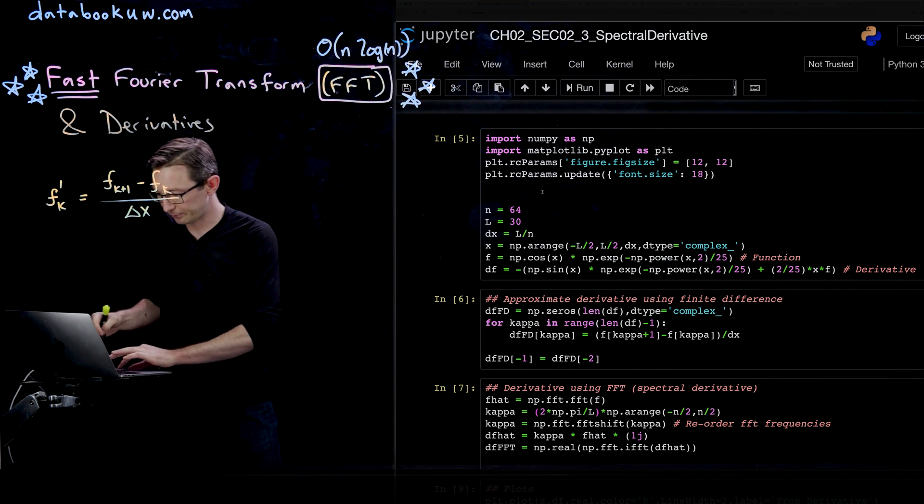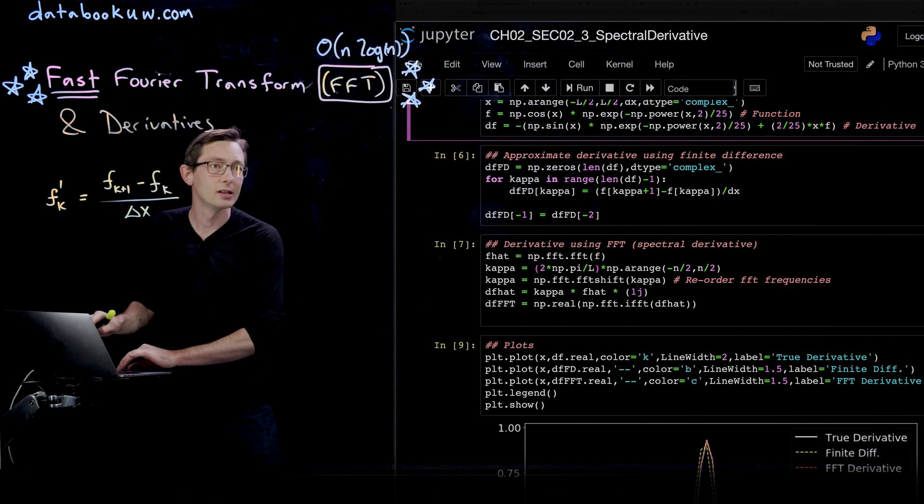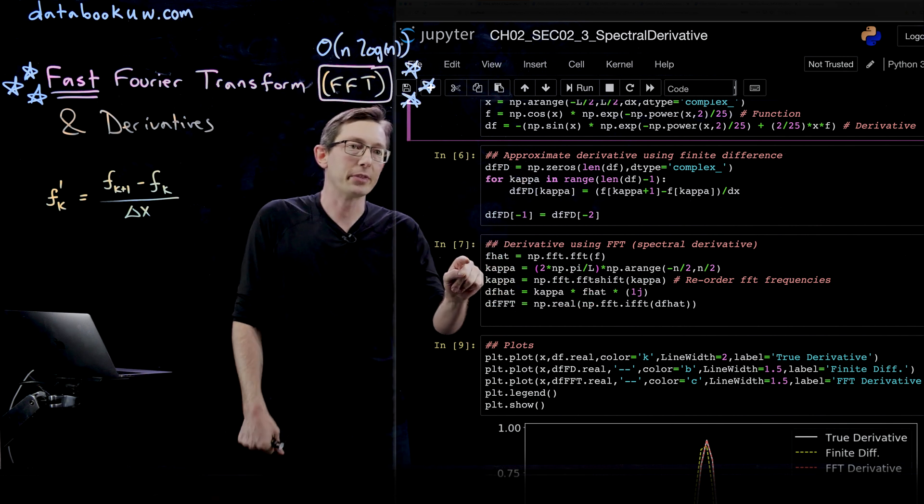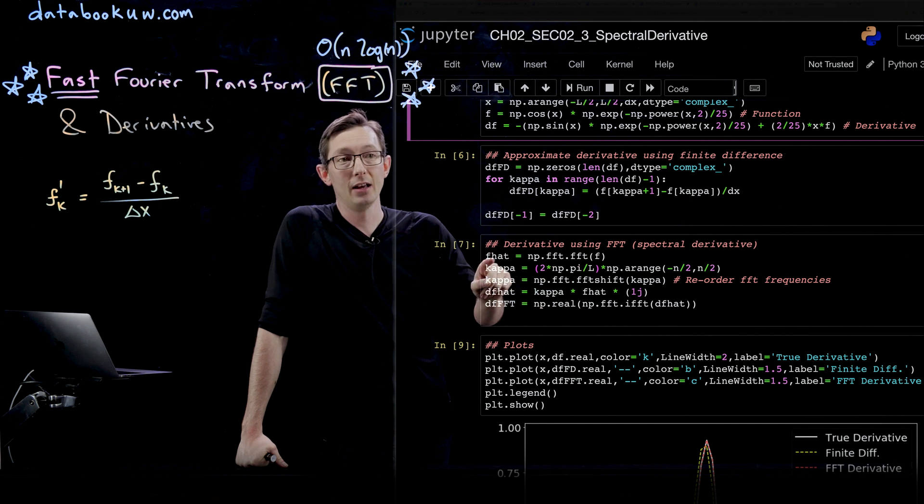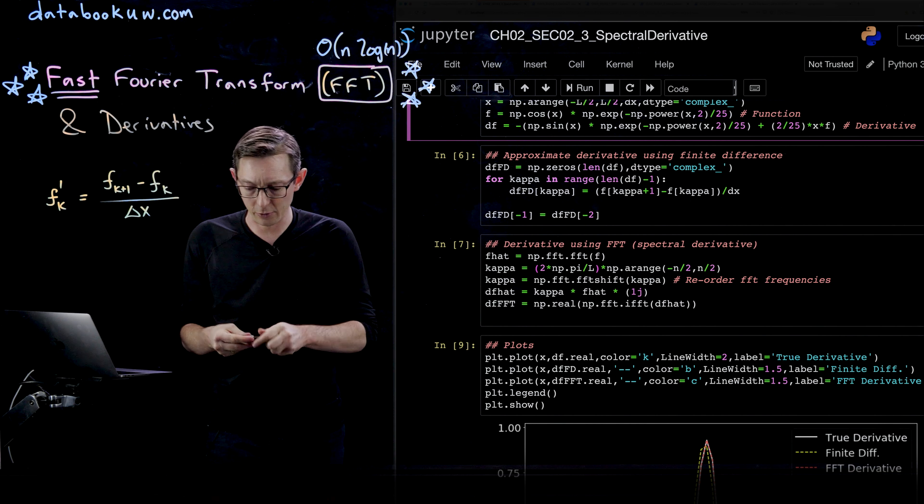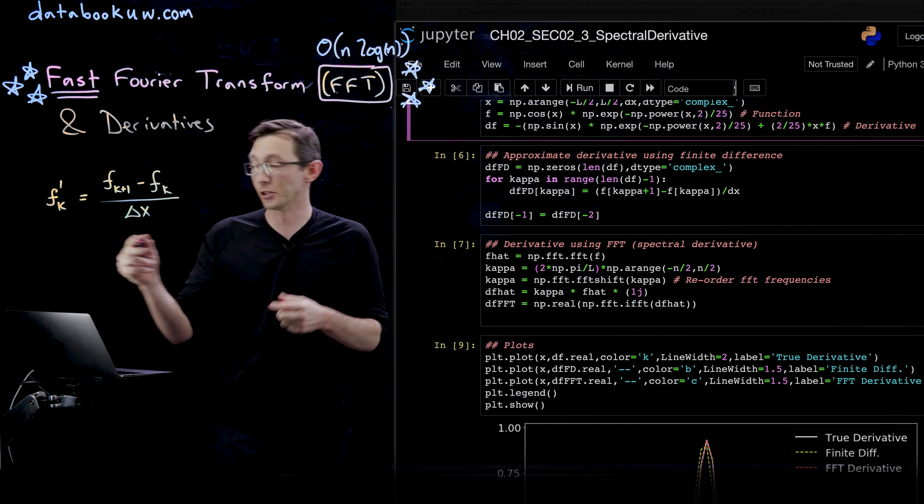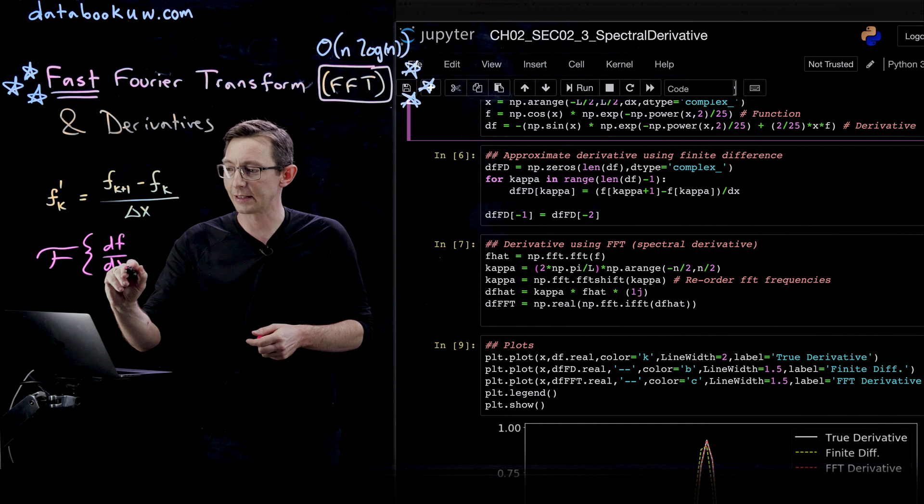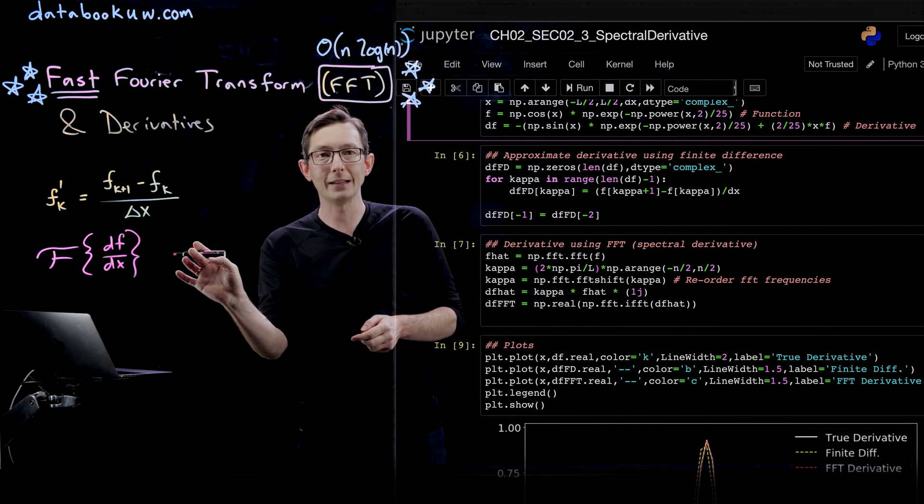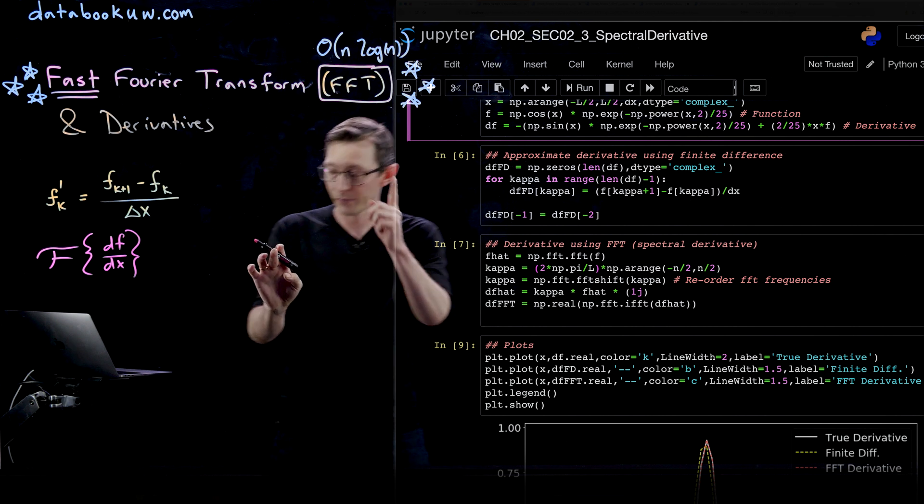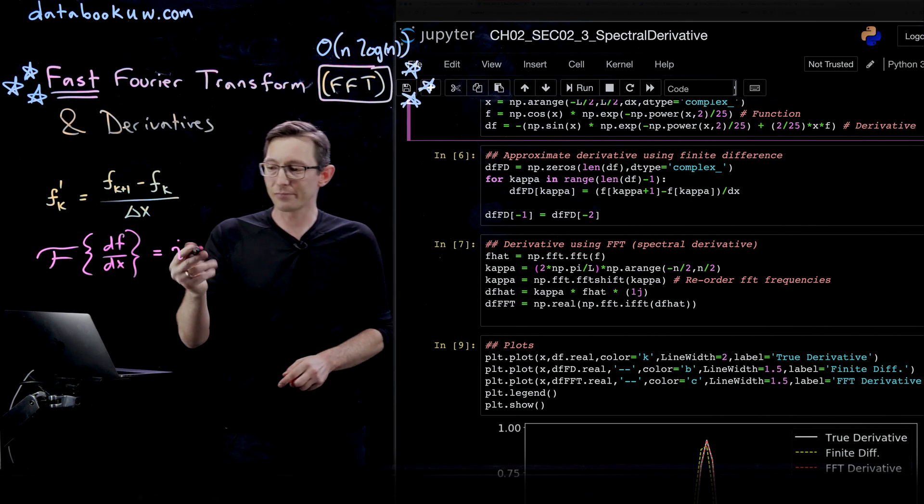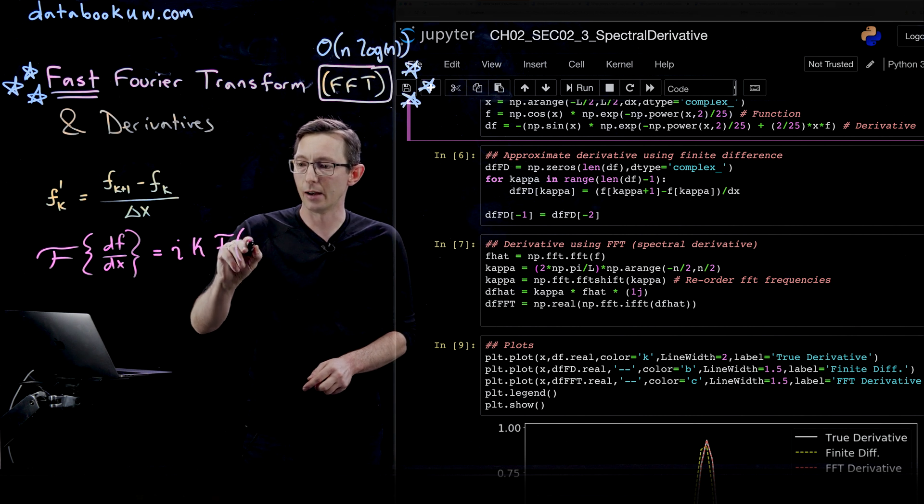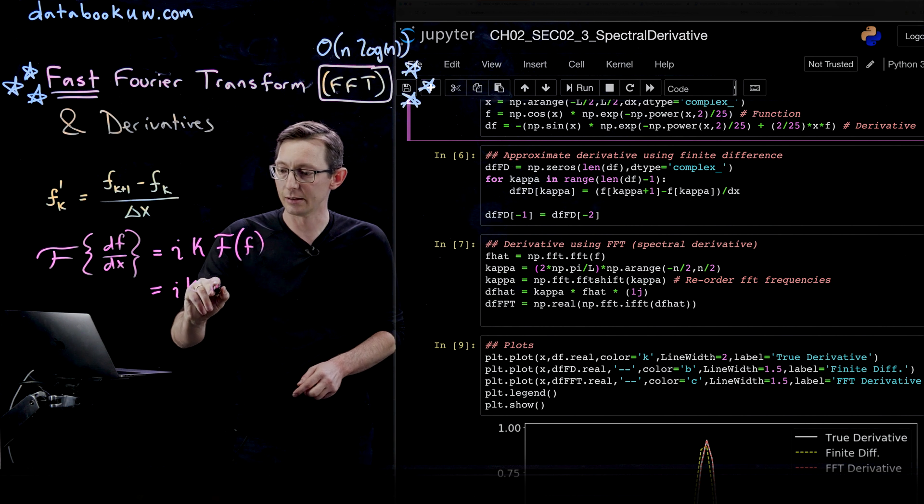The really important part is how we actually compute the derivative using the FFT. We call this the spectral derivative. First, you take the FFT of your function f into f hat. Remember, if I take the Fourier transform of the derivative of a function with respect to x, we can write that as the product of i times the frequencies times the Fourier transform of f. So this is i times, sometimes I write this as omega, here I'll write this as kappa times the Fourier transform of f, or i times kappa times f hat.